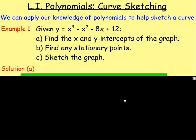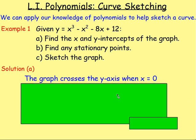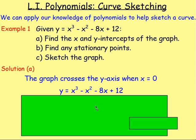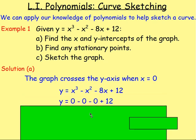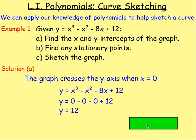So first of all, with part a, we want to find the x and y intercepts. So you know, the graph crosses the y axis when x equals 0. So we replace x with 0. So y would equal 0 cubed minus 0 squared minus 8 times 0 plus 12, which is just 12. Meaning it's going to cross the y axis at the point 0, 12. So we've found out the first part.